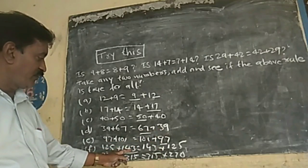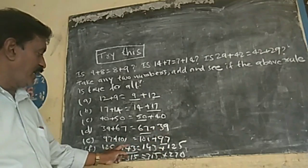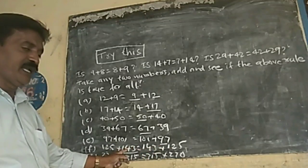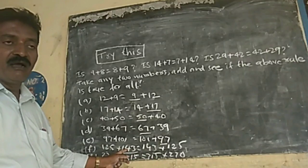125 plus 143. 125 plus dash is equal to 143 plus 125. Here, 125, right, 143 here. The answer is same.